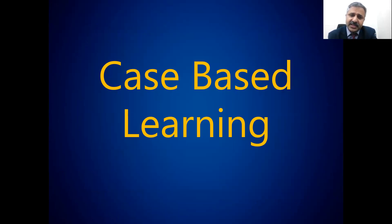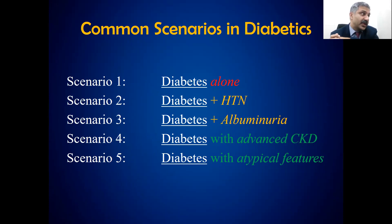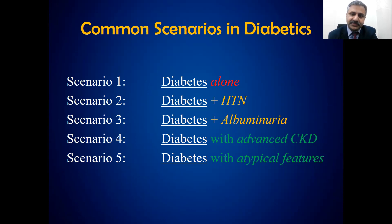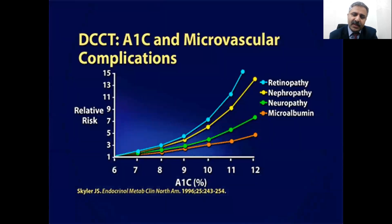I have developed this case-based learning to make it easy for general practitioners. In your clinical practice, you could encounter only five scenarios: a new-onset diabetic patient, diabetes with hypertension, diabetes with albuminuria, diabetes with advanced chronic kidney disease, or a diabetic patient without typical features of diabetic nephropathy — meaning atypical features.